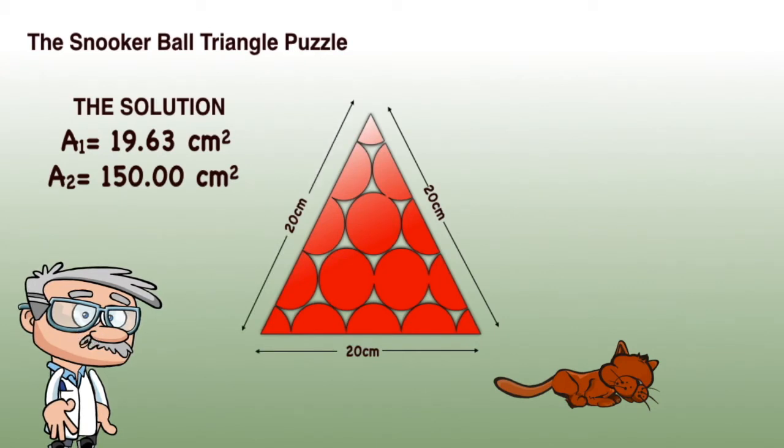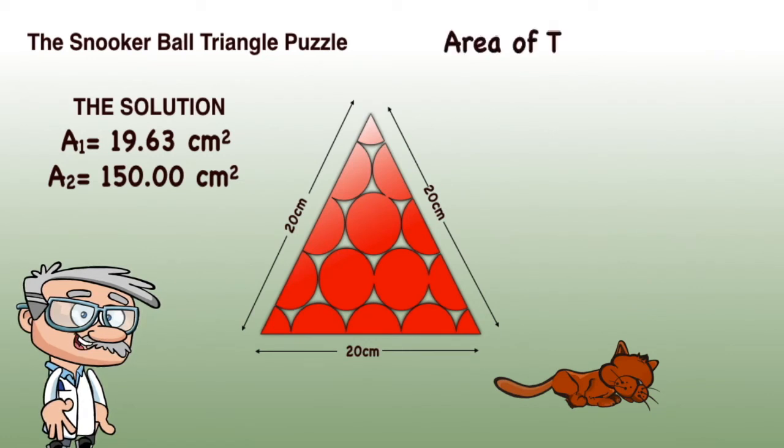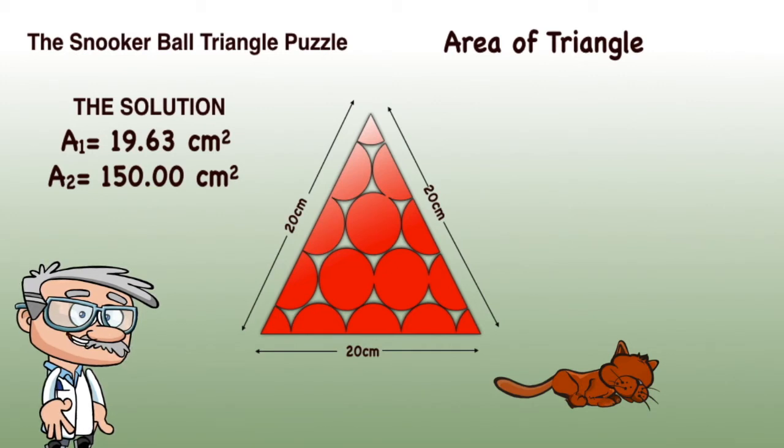Now let's consider the last shape, the inner triangle. This is an equilateral triangle, each side being 20 centimeters. There are a few formulas for calculating the area of a triangle.